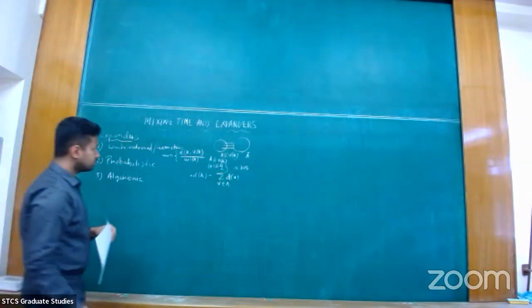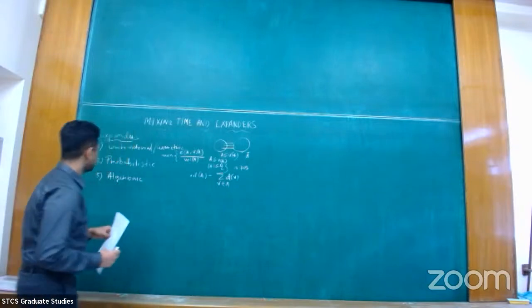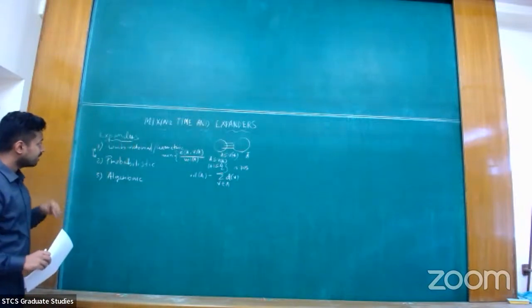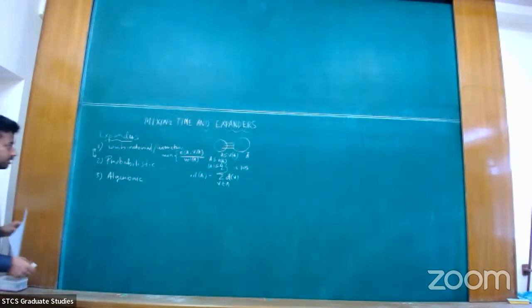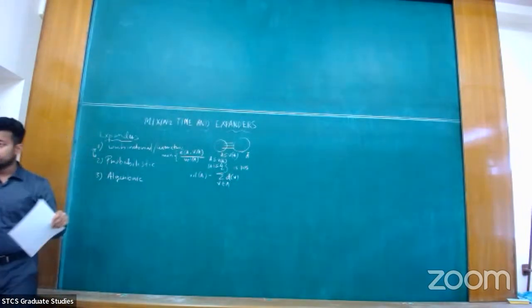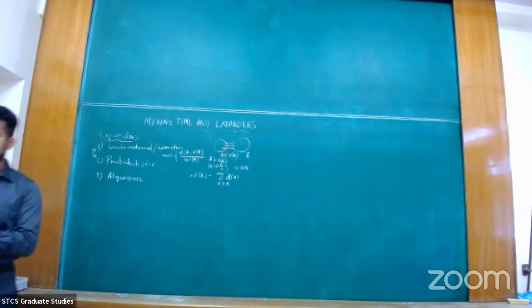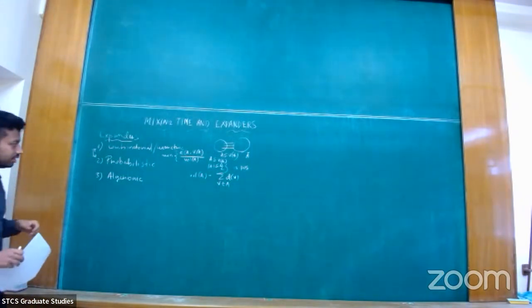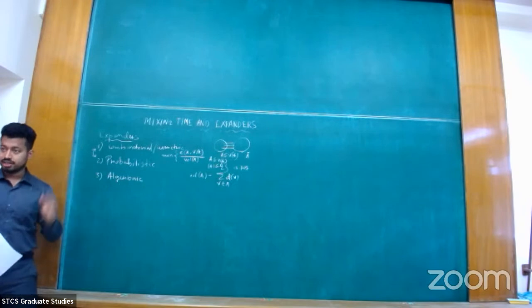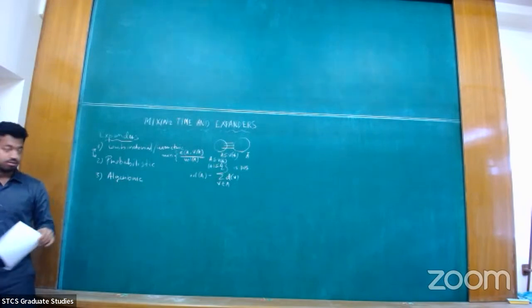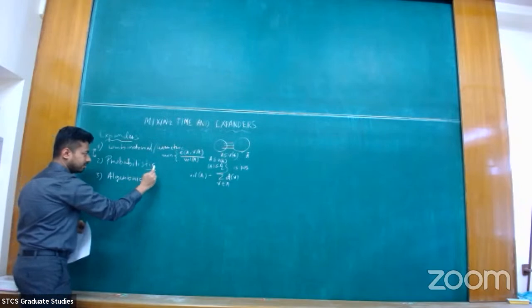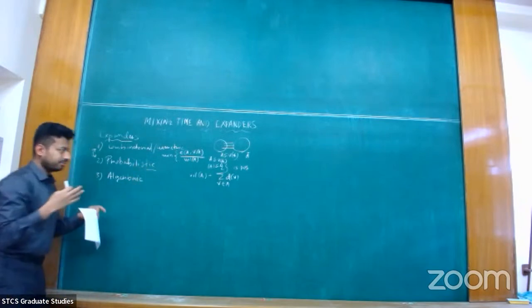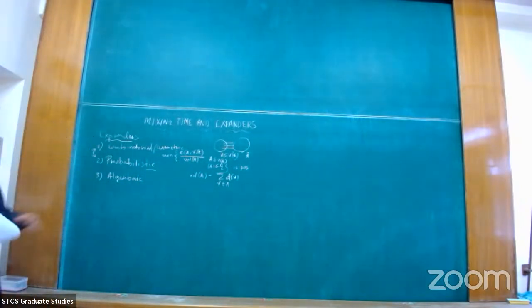This is how we can define an expander. In the probabilistic way, you look at the random walk on the underlying graph — the standard random walk — and check what the mixing time is. I'm going to talk a lot about how this mixing time is related to the other notions.